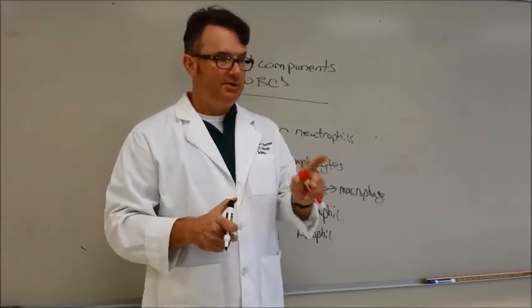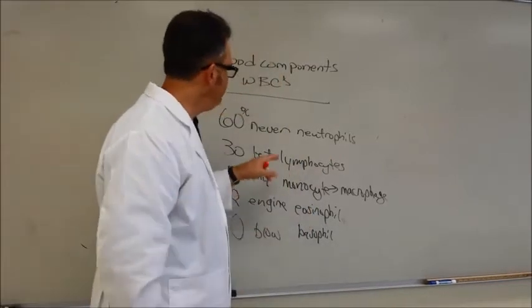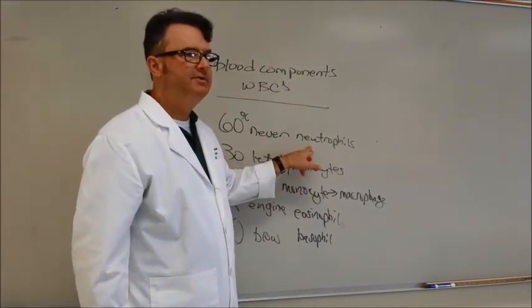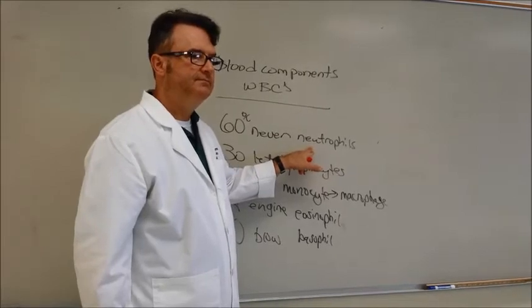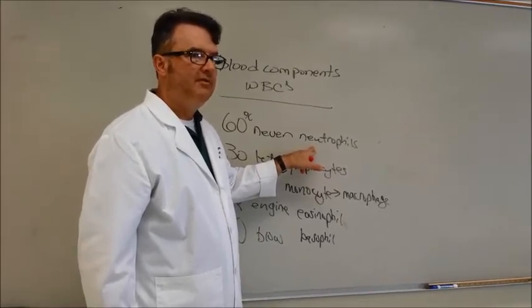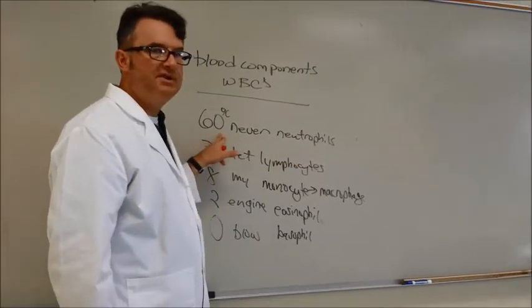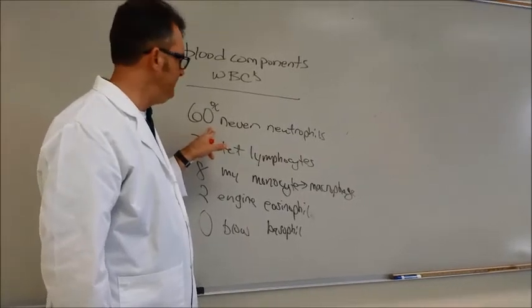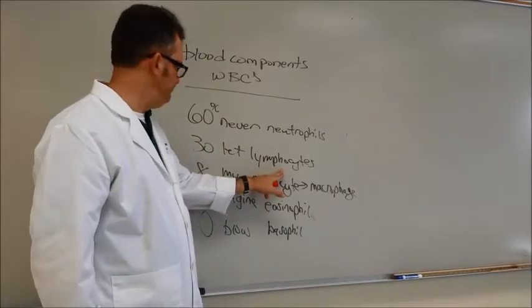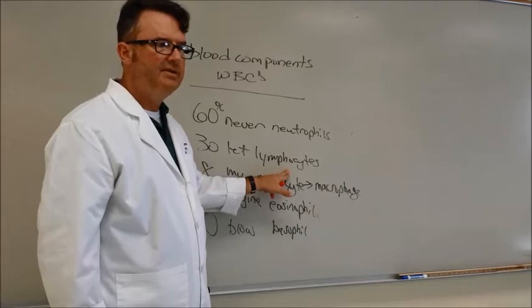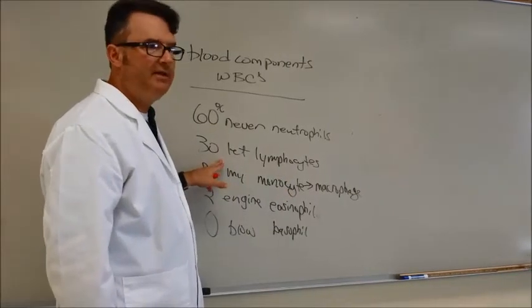I want you to look on these charts and tell me, what is the percent listed in your book for neutrophil? 54 to 62. So 60 hits right in the middle of it. What about lymphocytes? 25 to 33, and we got 30, right?